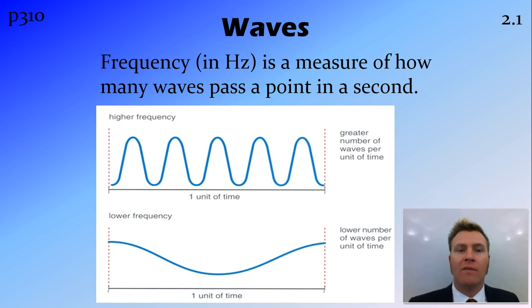Another measure of waves is the frequency. This is inversely proportional to the wavelength, meaning long wavelength, low frequency, short wavelength, high frequency, and it's a measure of how many waves pass a particular point in a second.